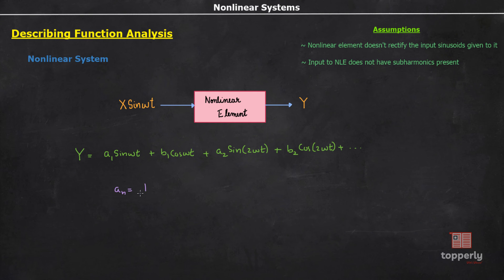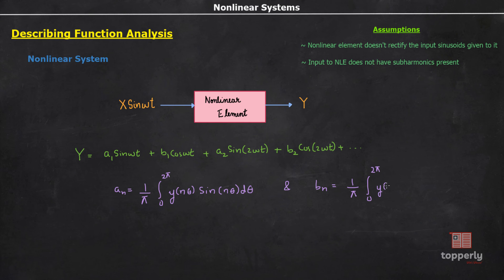The coefficient aₙ is given by (1/π) ∫₀²π y(nθ) sin(nθ) dθ, and the coefficient bₙ is given by (1/π) ∫₀²π y(nθ) cos(nθ) dθ. Also note that there is no DC element a₀ present in the series, because we had initially assumed that the nonlinear element does not rectify the input sinusoid given to it.